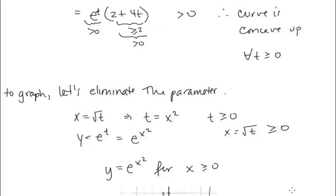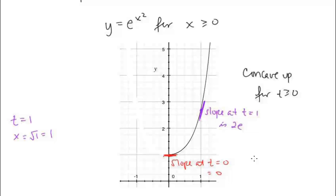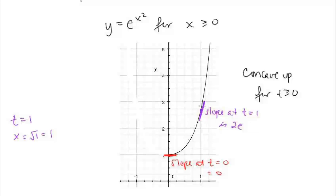Now let's graph this curve by eliminating the parameter. We have x equals radical t, so solving for t gives t equals x squared. And y equals e to the t becomes e to the x squared. Note that x is always greater than or equal to 0, so we're graphing y equals e to the x squared for x greater than or equal to 0 — the same graph from Lesson 22. The slope is 0 at t equals 0, 2e at t equals 1, and the graph is always concave up.